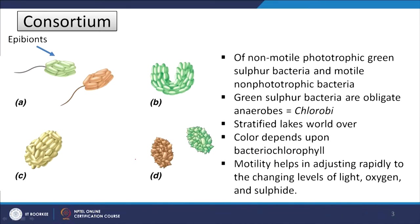The next example we want to talk about is a consortium. This often happens in stratified lakes. In stratified lakes, light can penetrate from the surface down to some depth but not further. At the top we have phototrophic organisms, aerobic microorganisms, and other life forms. As we go deeper, we have an anoxic and anaerobic environment. In such lakes, mixing is not common, and we often see a consortium of microbes. This consortia typically includes two kinds of members: one motile and the other non-motile.